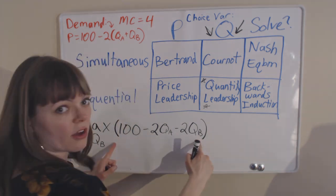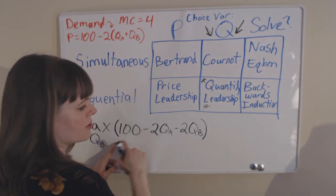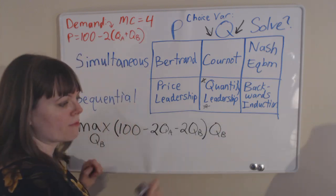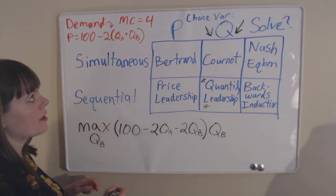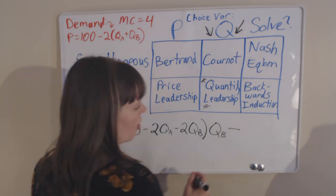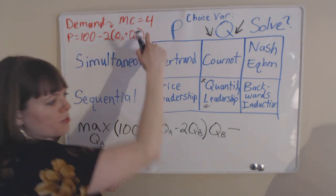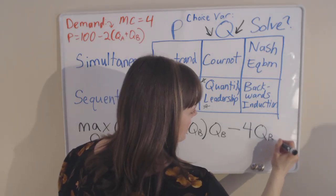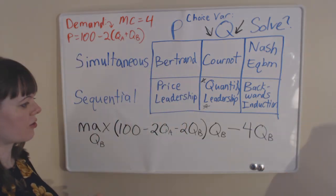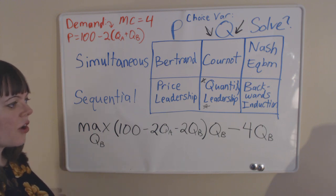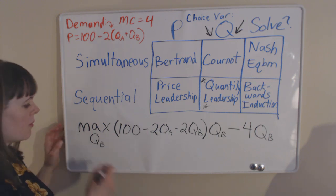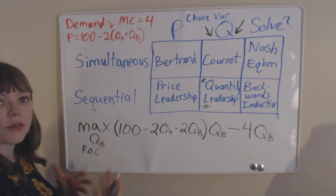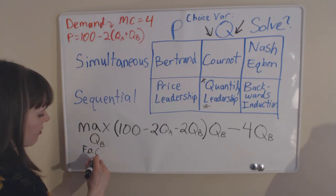We've got our price, and to get total revenue, we multiply price by quantity, and that's the quantity that firm B produces. Then we subtract our total costs, which are just the $4 per unit it takes to create one of these, times the quantity that we, as firm B, choose to create. Once you have this maximization problem, you can take the first order conditions, solve all the way through, and get some value for QB.